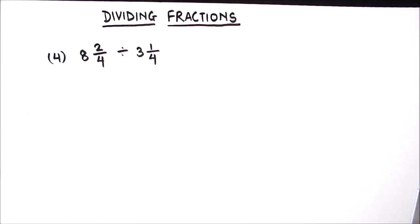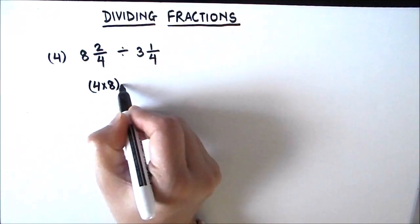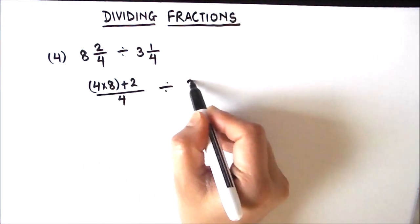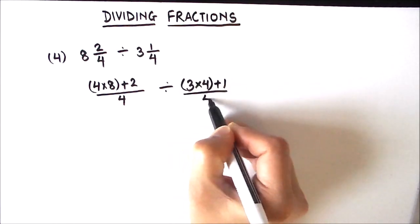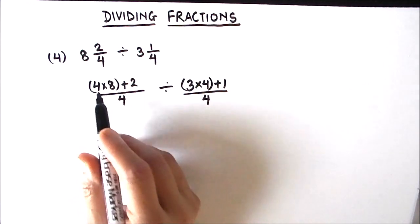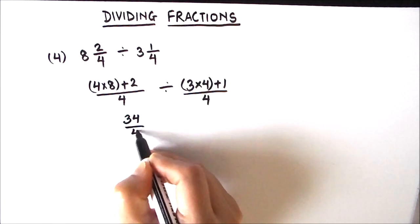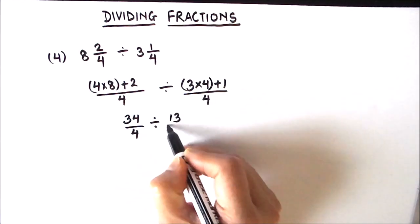In the next example we are dividing two mixed fractions. The first step is to convert both mixed fractions into improper fractions. So 4 times 8 plus 2 over 4, divided by 3 times 4 plus 1 over 4. That gives us 34 upon 4 divided by 13 upon 4.